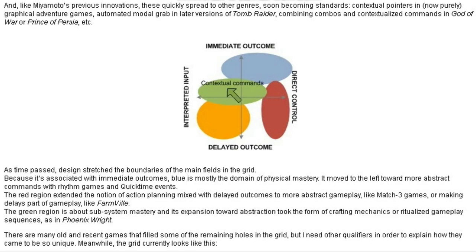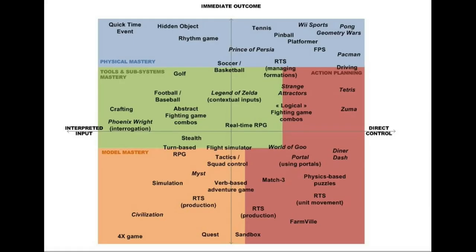The theory is far more nuanced and complex than I can do justice to here, involving information theory, cybernetics and feedback loops, amongst other things. For example, if we take just two variables — direct control like in action games versus interpreted input like in a quick time event on the x-axis, and on the y-axis, immediate outcome versus delayed outcome — we can map where specific games lie. Arcade games are in the top right because they have direct control and respond immediately. Conversely, text-based adventure games and strategy games are in the bottom left, because they involve interpreted input, language processing, and have a delayed outcome.